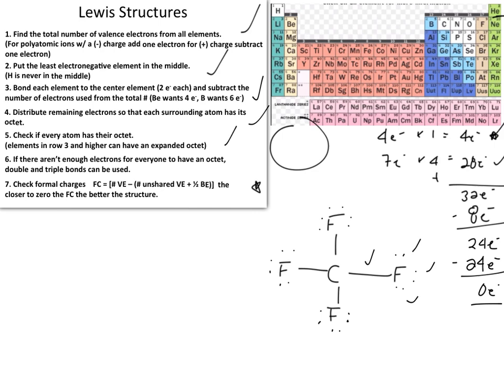This leads us to step number seven. Because everyone has their octet, we skip step six and move directly to step seven: checking formal charges. The formal charge on each element should be as low as possible — ideally zero. The closer to zero your formal charges are, the better your structure is.